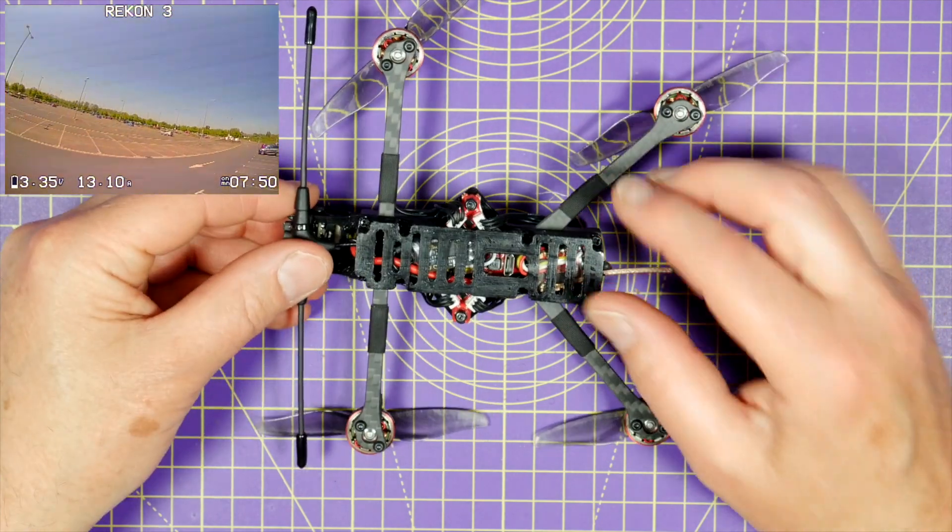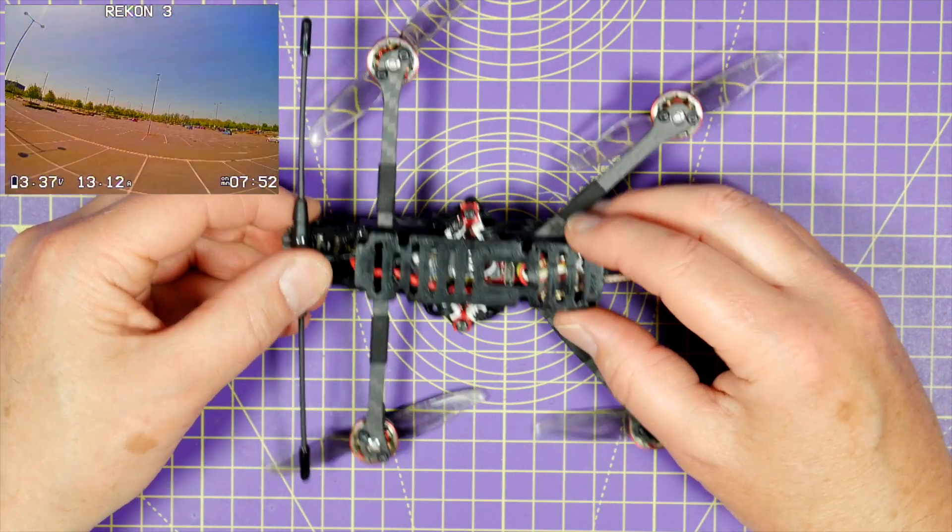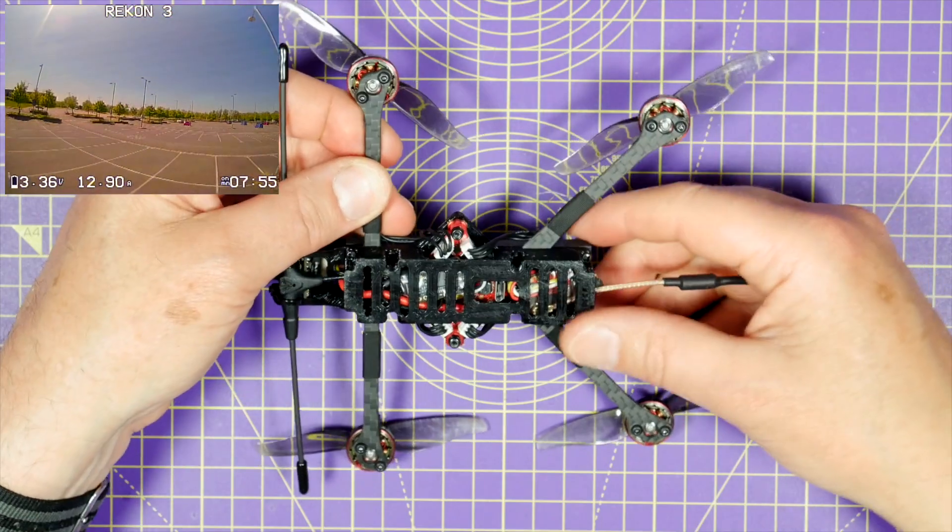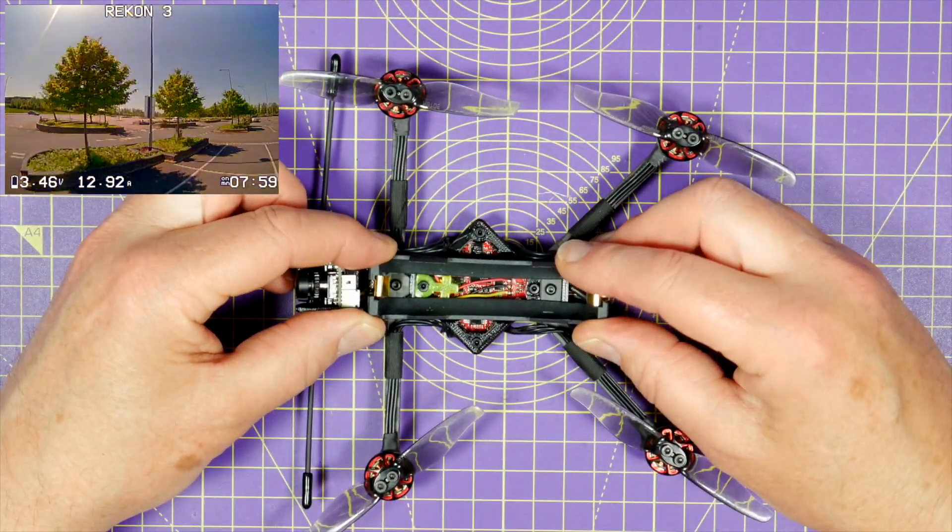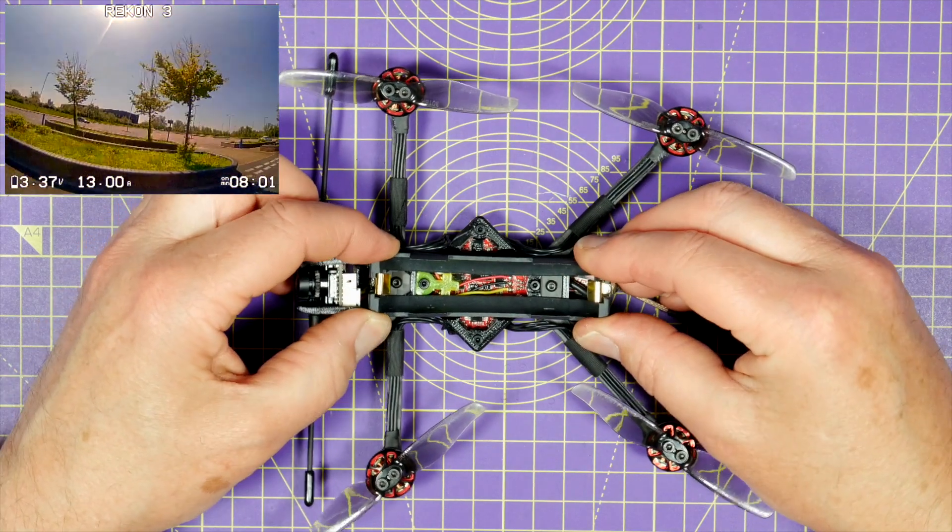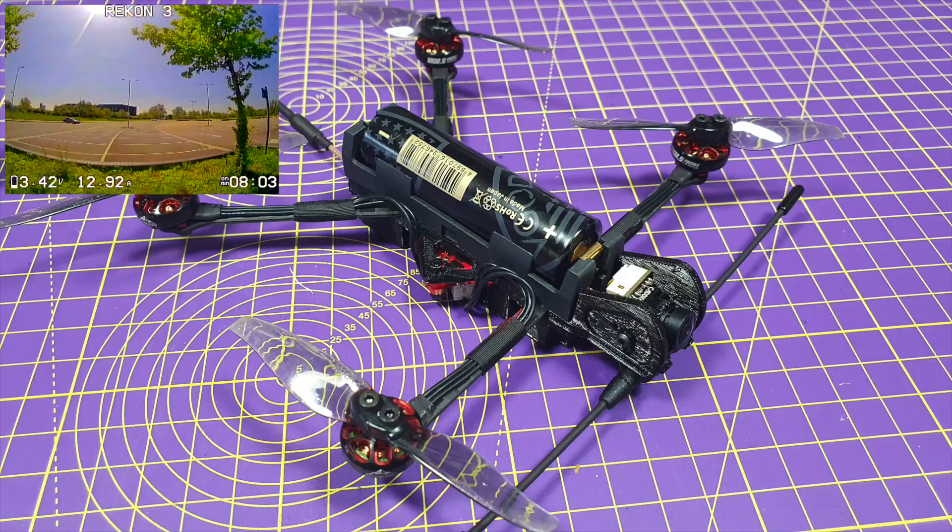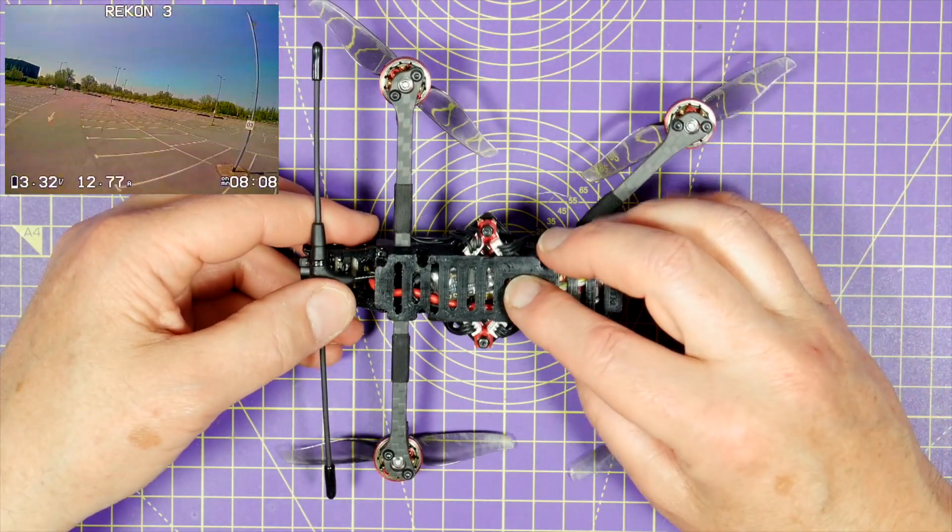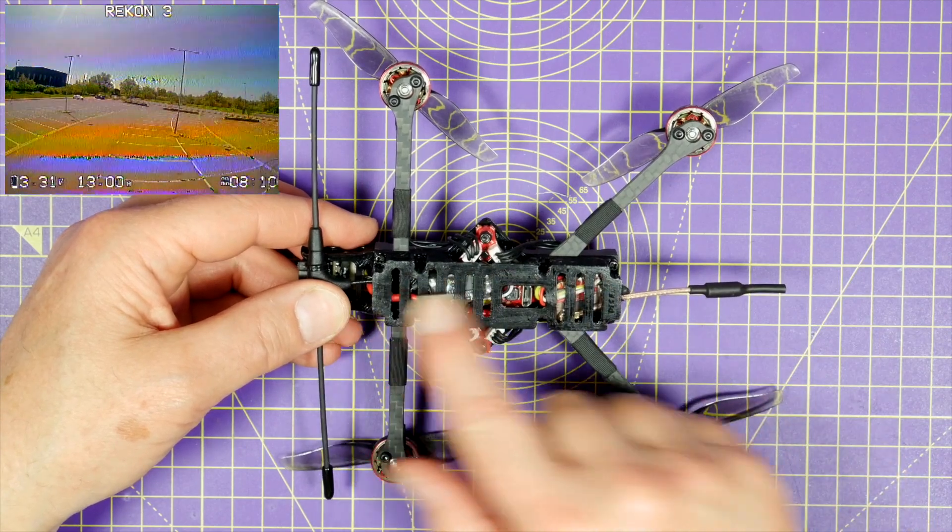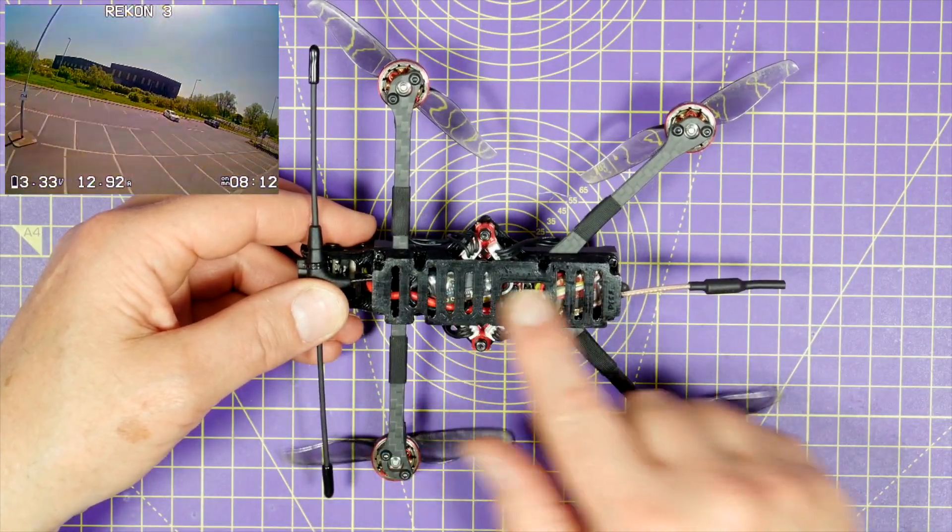There's a lot of 3D printed parts on this to keep the weight down. But the frame itself is 2mm carbon. On the top there's a battery holder, a real battery holder that's been repurposed and bolted on there. All the electronics are bolted underneath with this 3D printed cage section on the bottom.